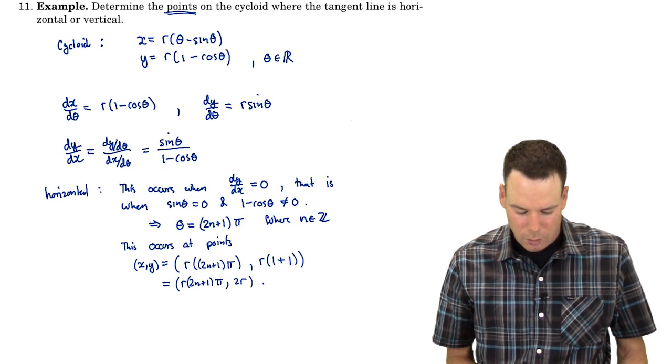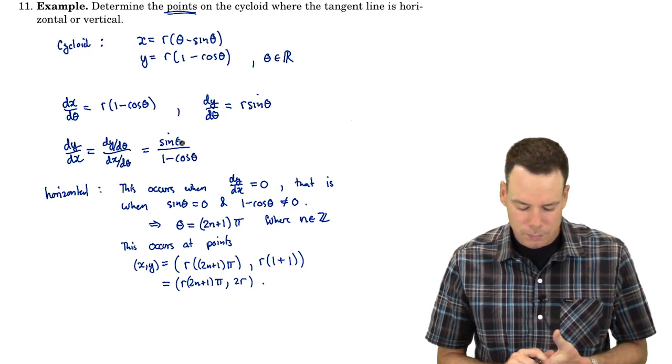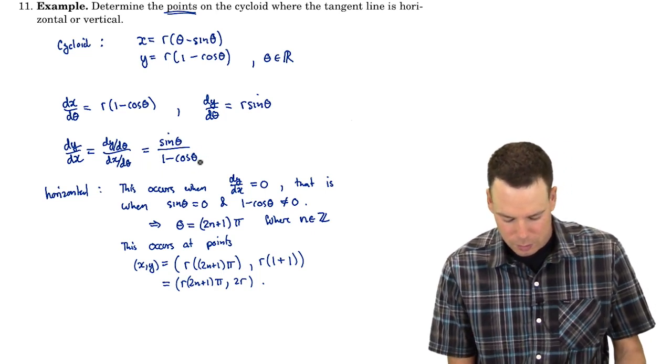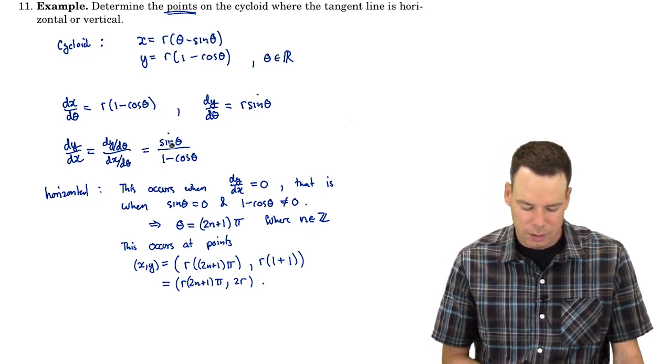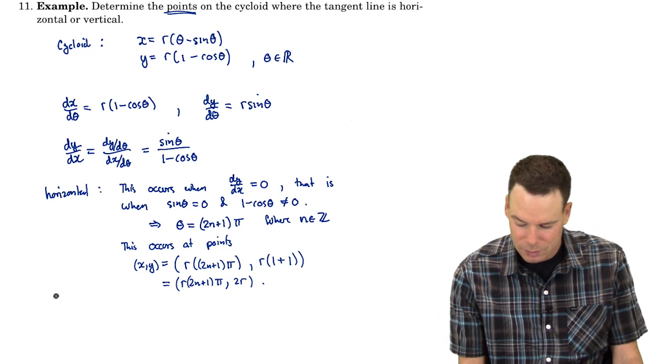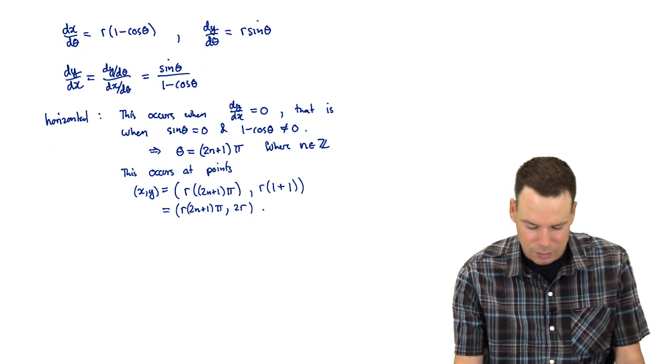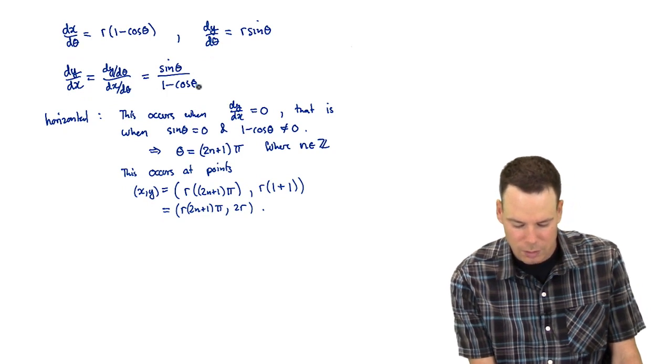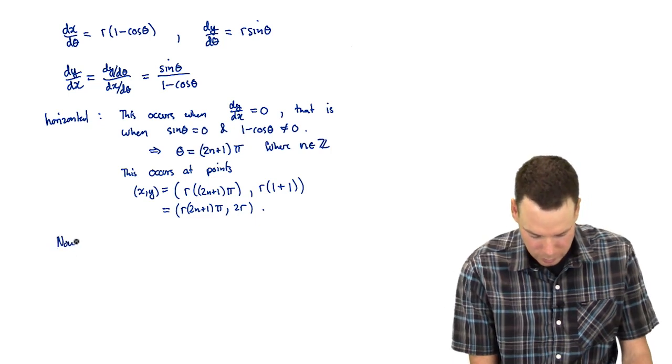How about where they're vertical? Well, when they're vertical, that's when the reciprocal of the derivative is 0. The problem is that wherever this thing on the bottom is 0, 1 minus cos theta is 0, sine theta is also 0. So we have to look carefully at the case when the denominator is 0. 1 minus cos theta is 0. Those are at the even multiples of pi. So we now consider that case.